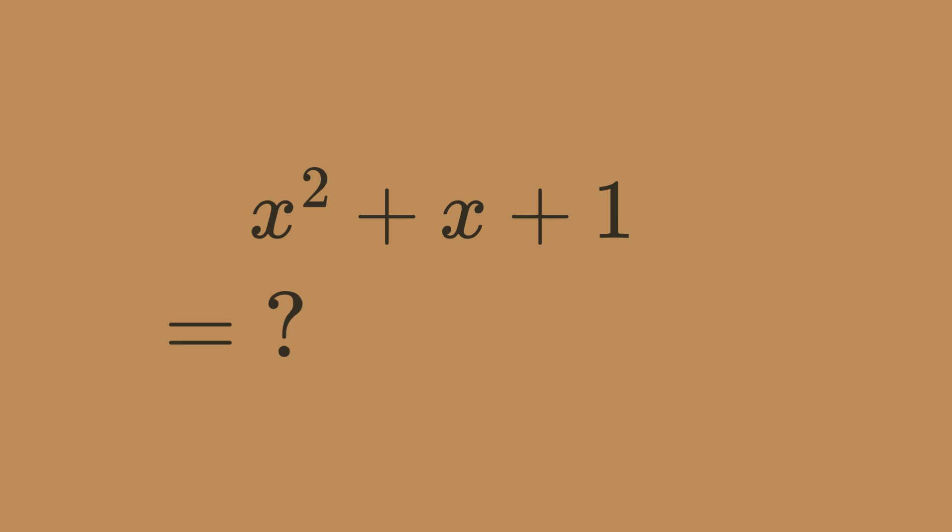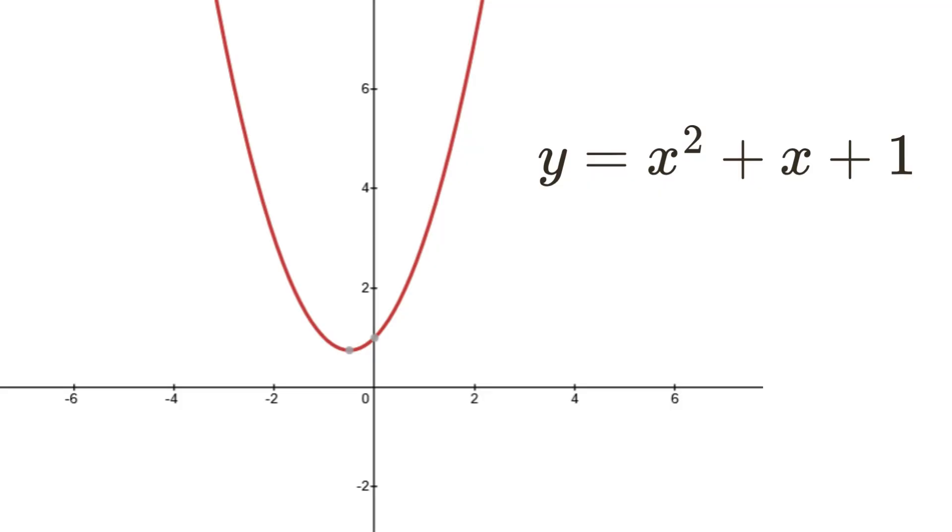But what if we cannot factorise a quadratic using real numbers? This was the problem that historical mathematicians had, because they only used real numbers like fractions, negative numbers, and positive numbers. So in a case like this, we would say that the equation has no real roots, and you can see this on the graph, because the curve doesn't touch the x-axis.